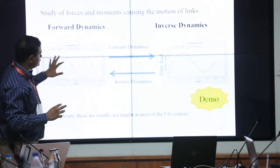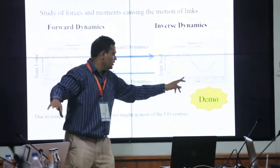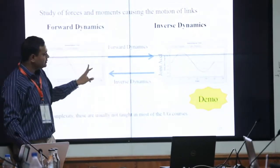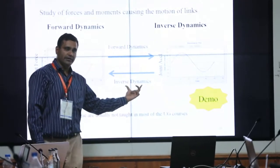If I know the motion of each joint, right, what should be the torque required to achieve that motion? That is known as inverse dynamics.